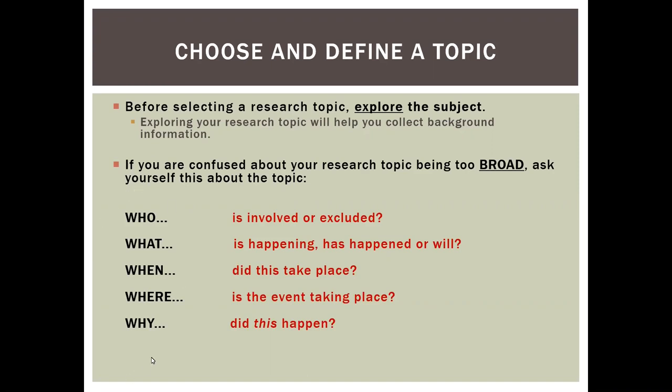When we move from a broad to a more narrow or specific topic of our research project or prompt, we're able to answer the five listed W questions. Those ask who, what, when, where, and why — allowing us to locate who's involved, what happens, when did this take place, where is this event taking place, and why is this happening, and what's most significant.